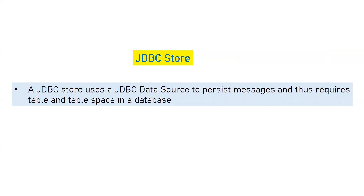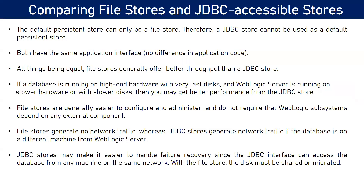When we talk about JDBC stores, because they store messages at the database level, you need a data source to access your database from WebLogic. You have to create a data source which will be assigned to your JDBC-based persistent store, because a data source is the only option to reach your database from WebLogic server. If the persistent store is JDBC-based, messages will be stored in the database and you'll reach it via the data source.